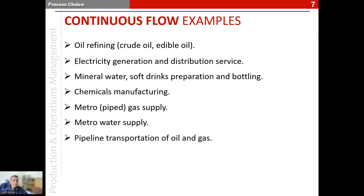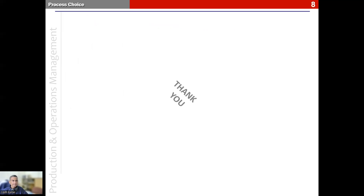The pipeline transportation of oil and gas over long distances — from wherever processing happens, through pipelines laid across the country — can also be seen as a continuous flow process. With these examples, we close our discussion on continuous flow, having now seen all five types of processes on the process choice spectrum. In the next video, we will summarize our learnings using the product process matrix.